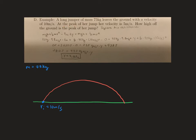So let's keep reading. At the peak of her jump, her velocity is 5 meters per second. So at our peak here, our velocity final is going to be equal to 5 meters per second.